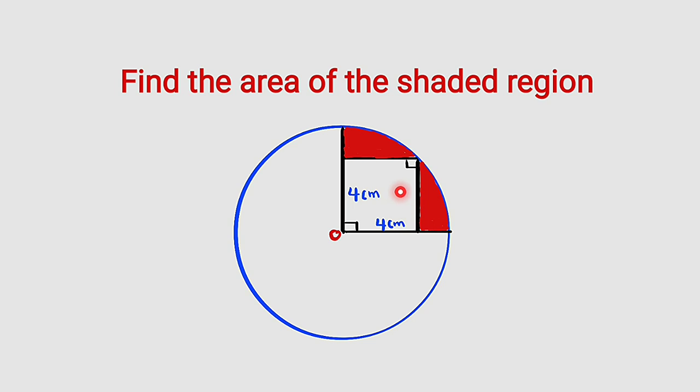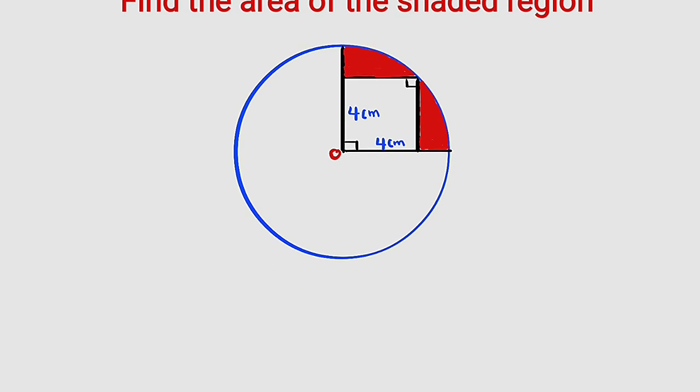What is left is the area of the shaded region. Therefore, the area which we are looking for, the shaded region, is equal to the area of the quarter circle, which is πr² divided by 4, minus the area of the square, which is length squared. But we have everything except the radius.